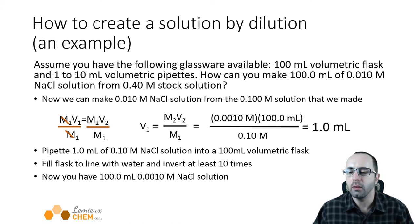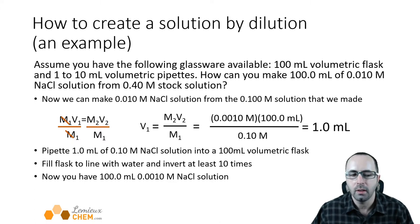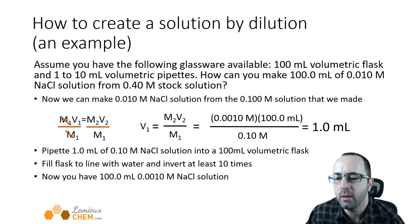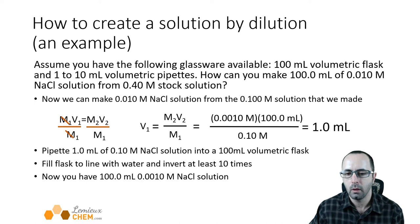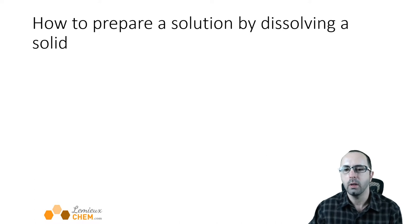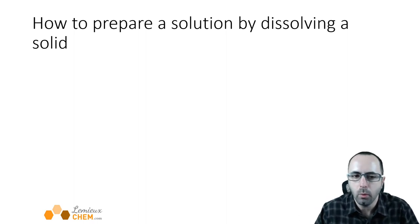So that's how you make a solution by diluting another solution. We chose a harder case where we had to do a serial dilution given the glassware available. What about if we need to prepare a solution by dissolving a solid? If we have a solid that we're making a solution from, then what will we do?